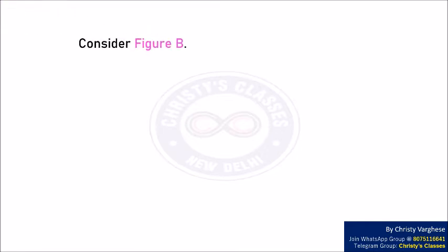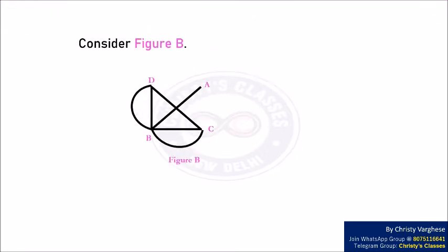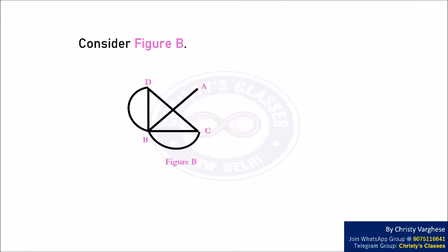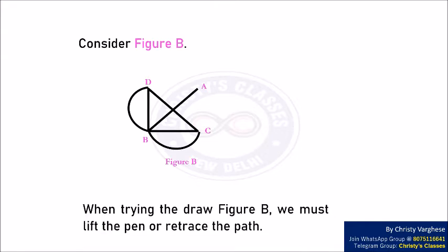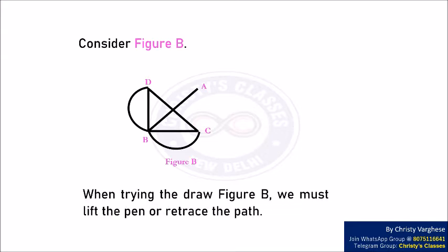Now consider figure B. Whichever path we choose, we see that figure B can be drawn only by lifting the pen or retracing the path.